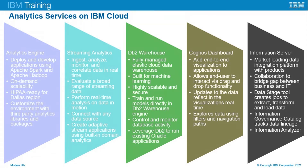You can also create adaptive stream applications using built-in domain analytics such as machine learning, natural language, spatial temporal, text, and acoustic processing. DB2 Warehouse is a fully managed elastic cloud data warehouse delivering independent scaling of storage and computing. It is built for machine learning, highly scalable and secure. You can train and run models directly in the DB2 Warehouse engine using SQL, Python, and R, with fine-grained access control, database auditing, and Oracle compatibility.